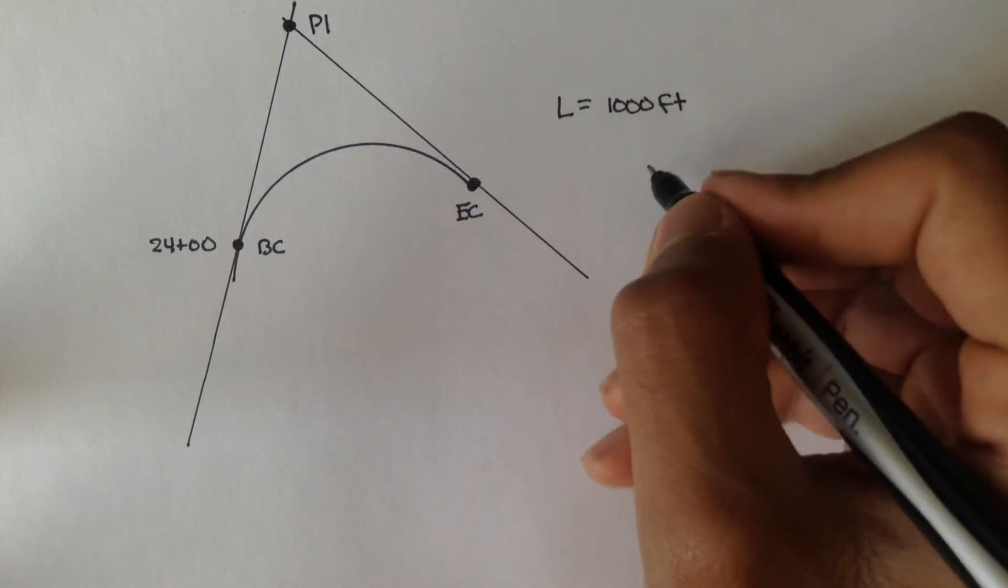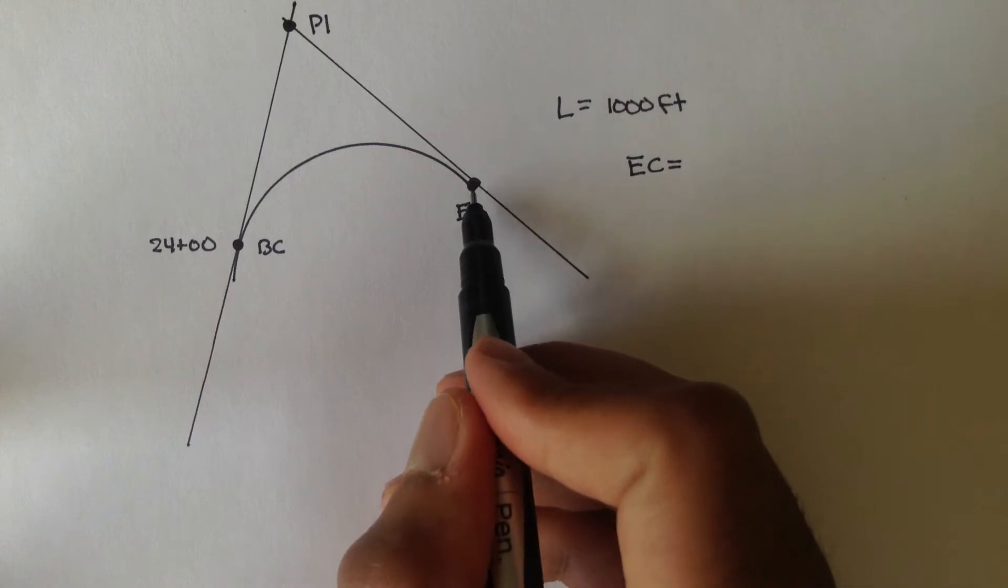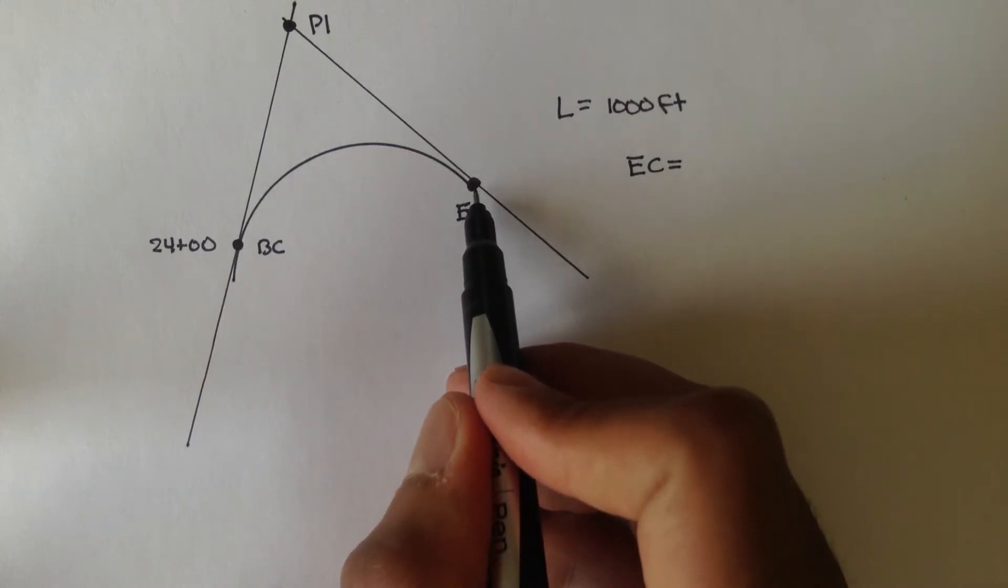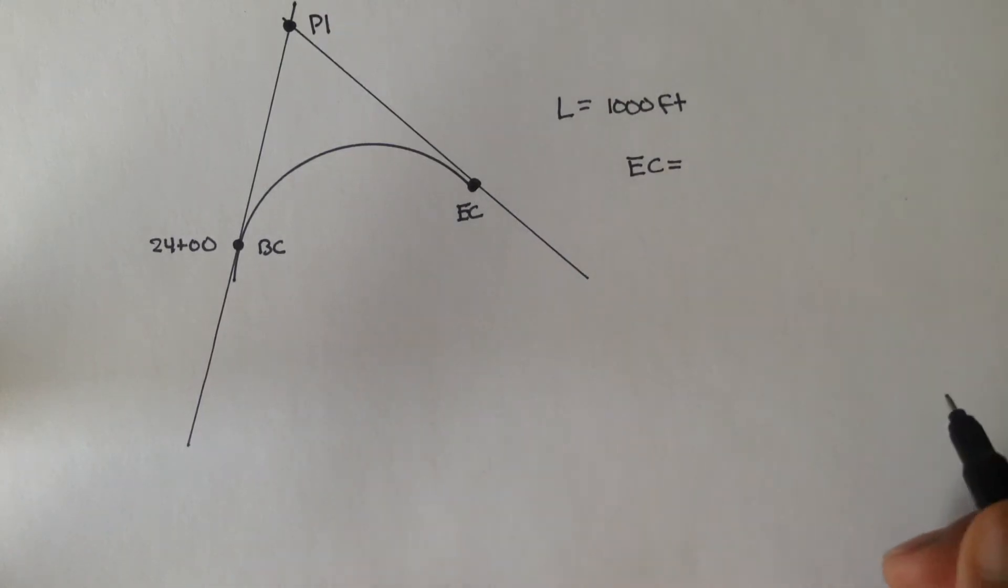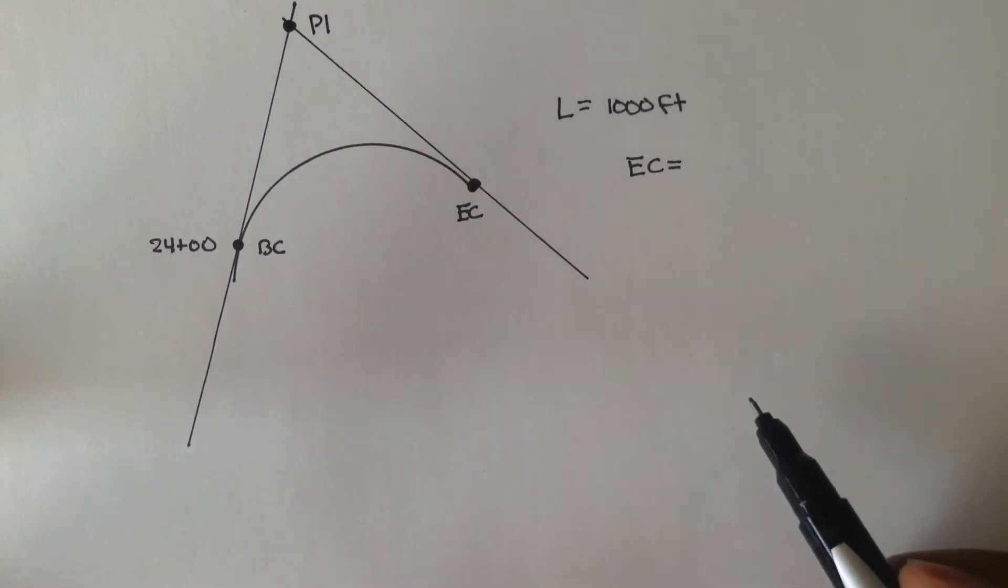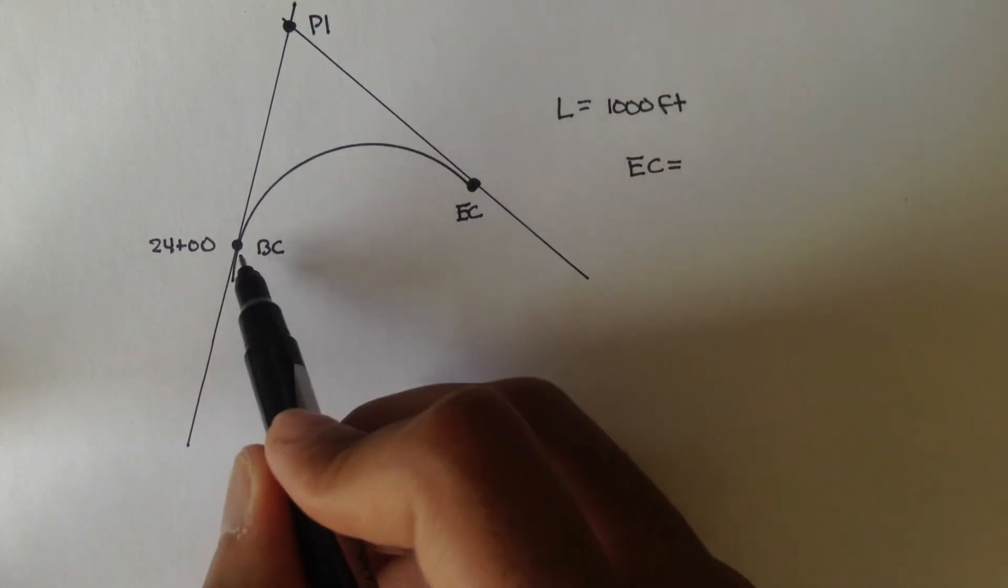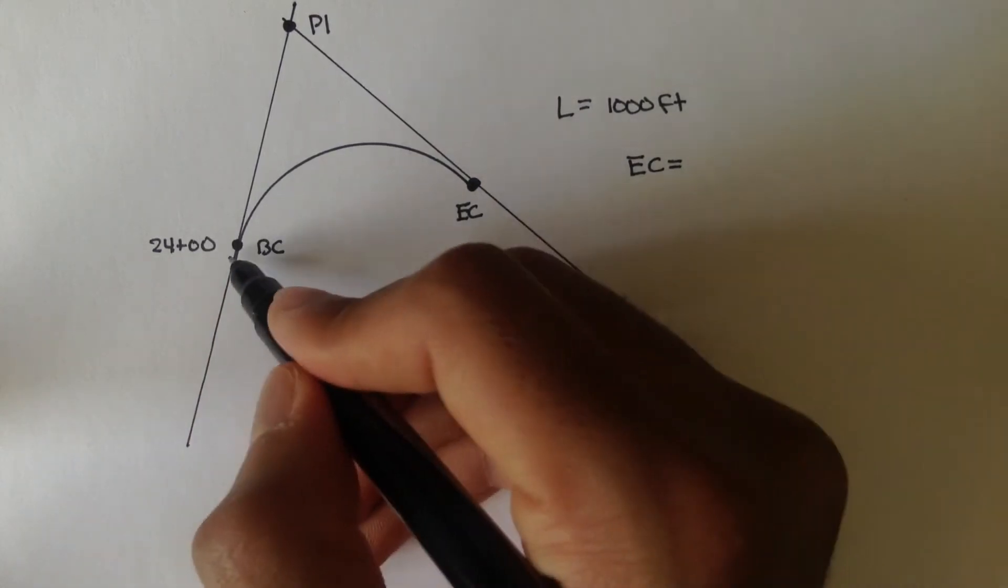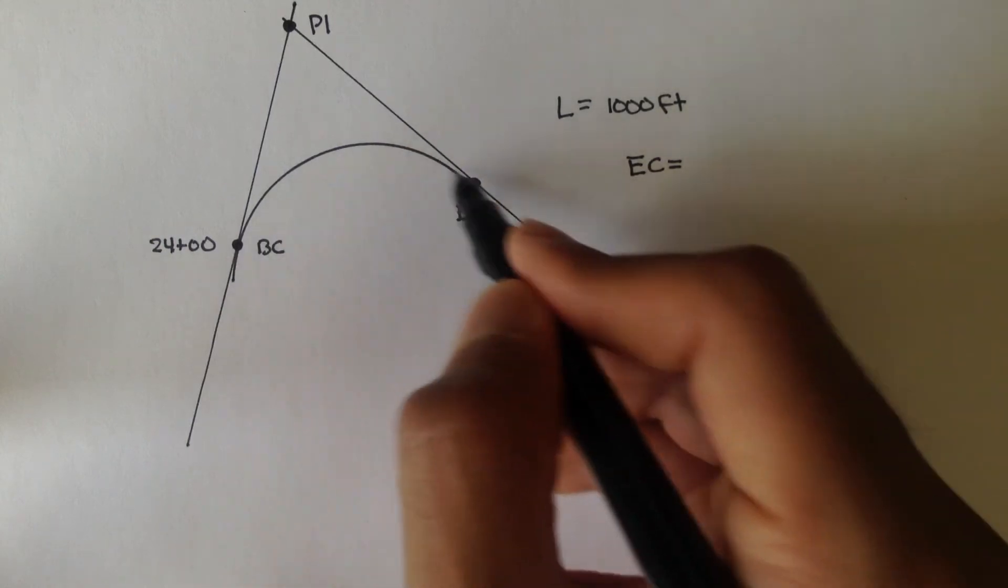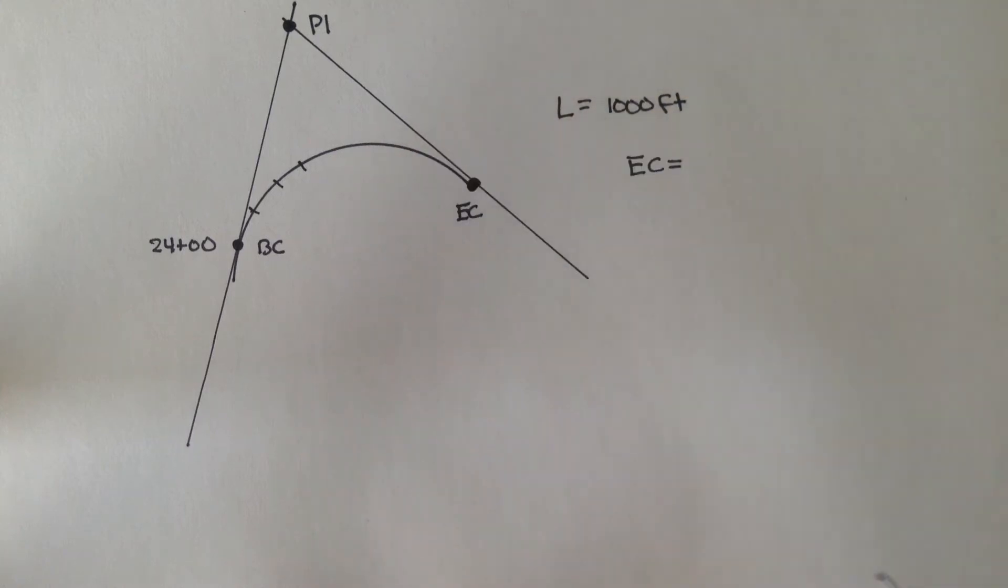And they are asking us to find EC. What is the station of the end of curve? And it's actually pretty simple. All you do is, you take whatever length you're given, and you add it to this station. Because remember, the stations are along this curve, by every 100. So 100, 200, 300, and so on.